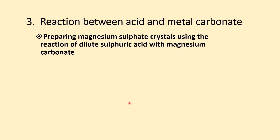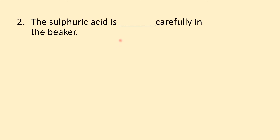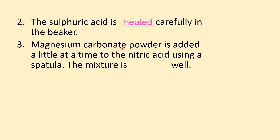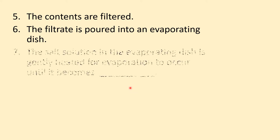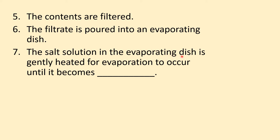Reaction between acid and metal carbonate: preparing magnesium sulfate crystals using the reaction between sulfuric acid and magnesium carbonate. The sulfuric acid is put into a beaker. When carbonate is added to acid — even without heating — it produces colorless bubbles, which is carbon dioxide gas. Add magnesium carbonate a little at a time using a spatula, stir well, and continue adding until some of it no longer dissolves. Filter the contents; the filtrate is poured into an evaporating dish and gently heated until it becomes saturated.